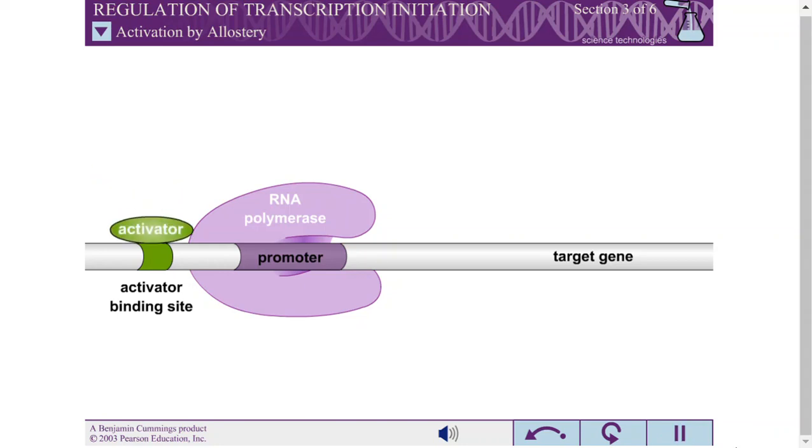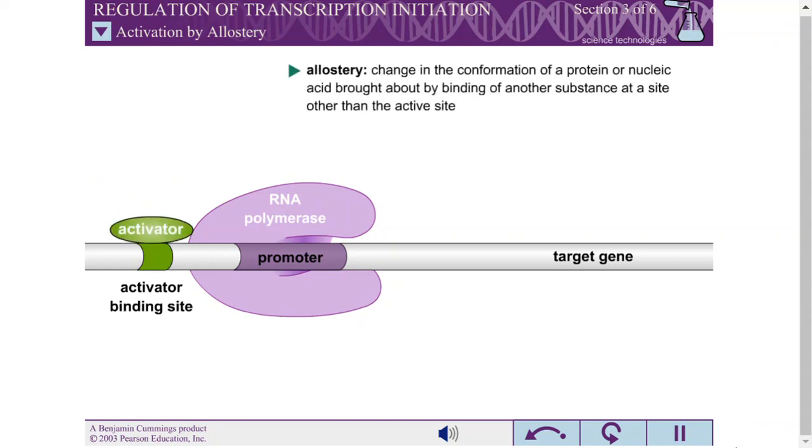At such promoters, activation is accomplished by allostery. Activators interact with the stable closed complex and induce a conformational change that causes transition to the open complex.